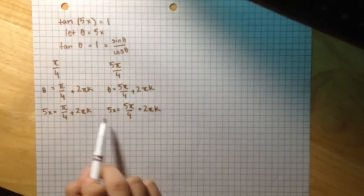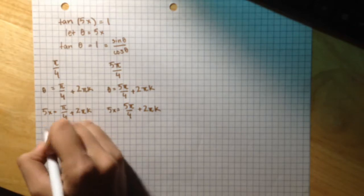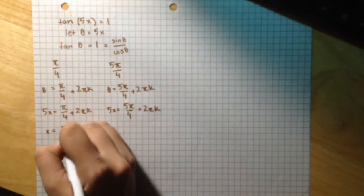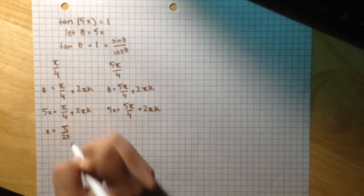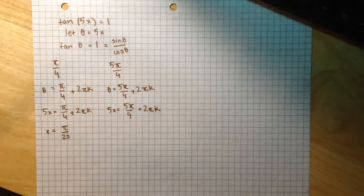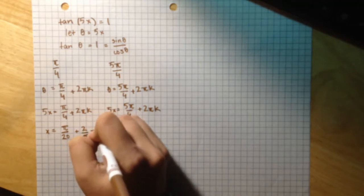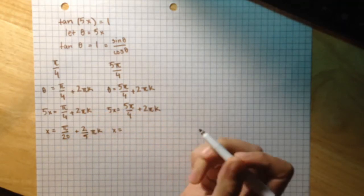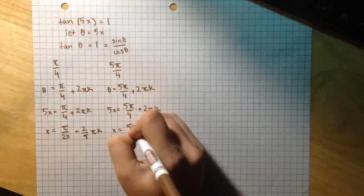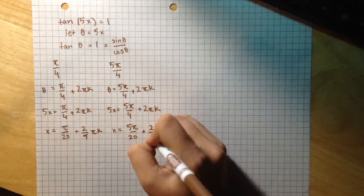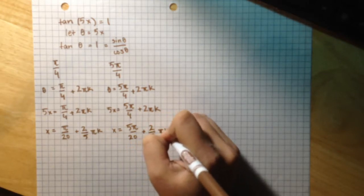Divide both sides of both equations by 5 to get x equals pi over 20 plus 2 over 5 pi k, and x equals 5pi over 20 plus 2 over 5 pi k.